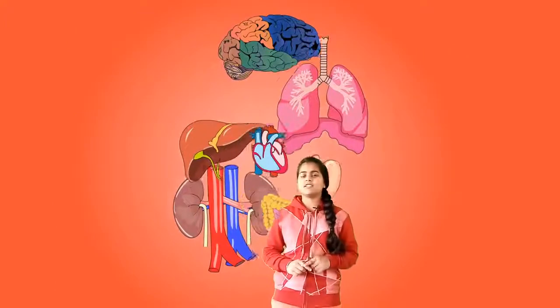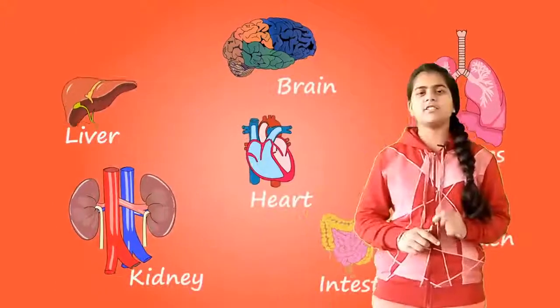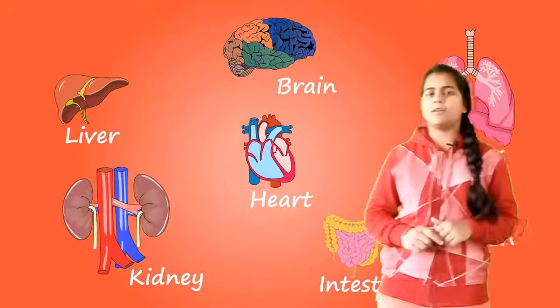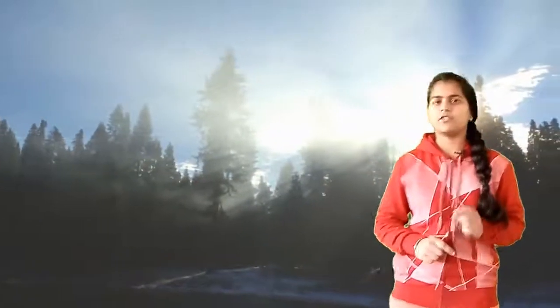Inside each kidney, there are about a million very small filtering units called nephrons. The excretory system of man consists of four types: a pair of kidneys, a pair of ureters, a urinary bladder, and a urethra.